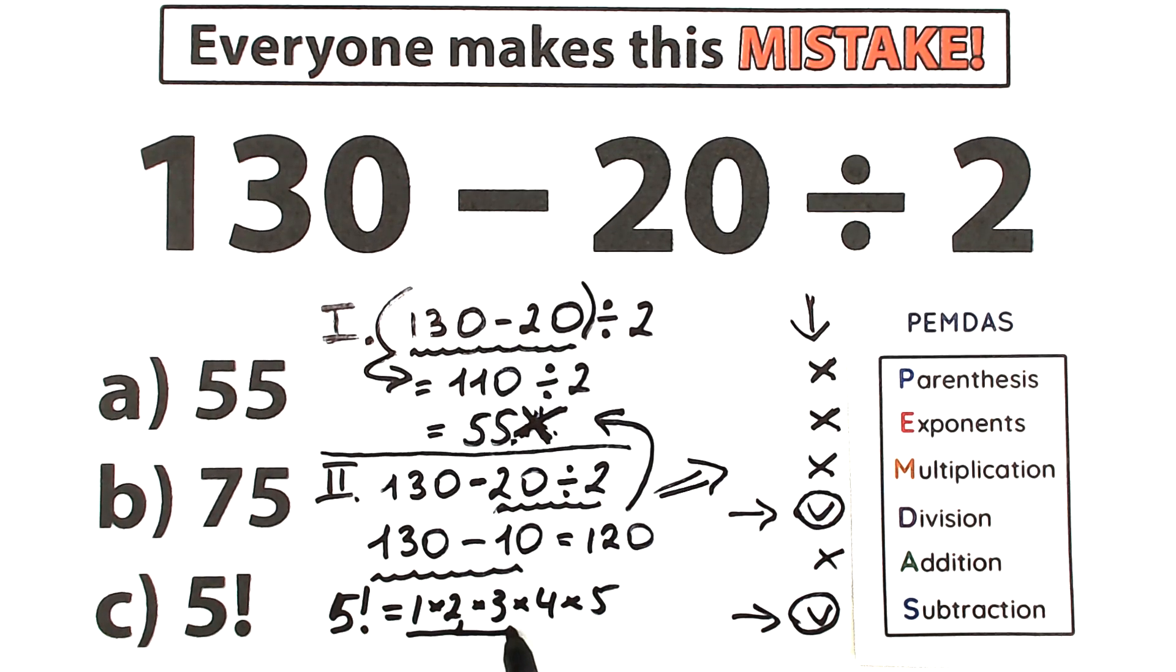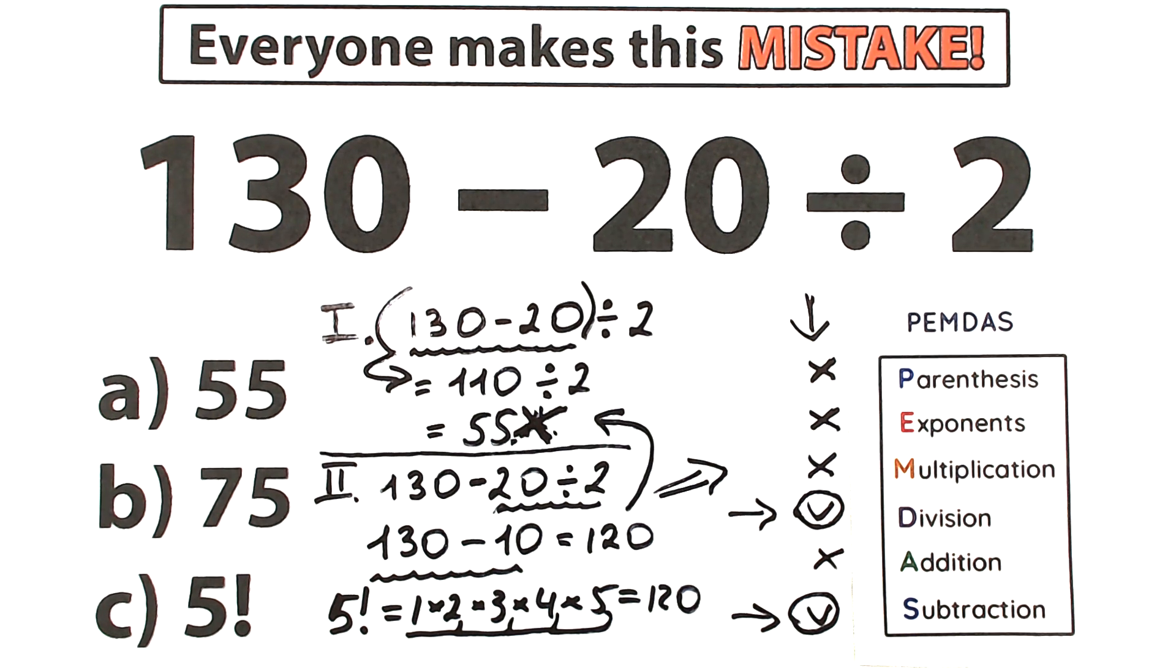1 times 2, 2. 2 times 3, 6. 6 times 4, 24. And 24 times 5. Yeah, brilliant, 120. So 5 factorial, this is the same as 120. So as you can see, according to PEMDAS, the correct answer is 120.